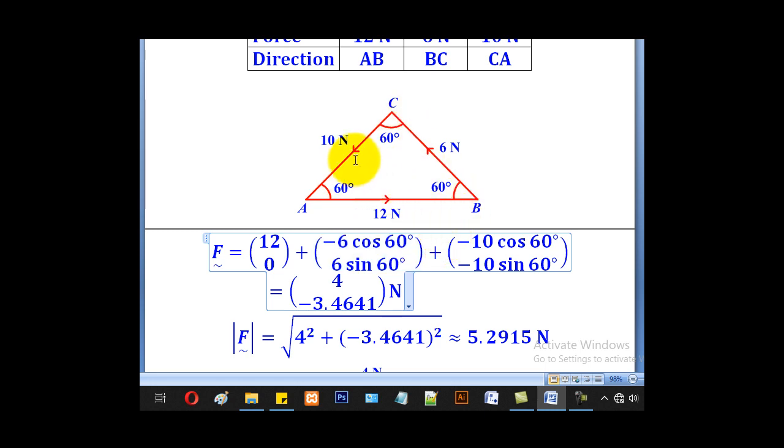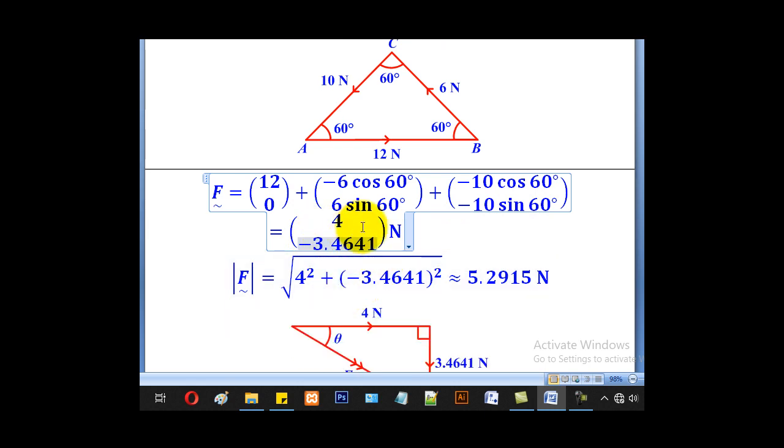For 10, horizontal it will be negative 10 cos 60, and vertically it will be negative 10 sin 60. Negative because it's going to the left, and also negative vertical because it's going downwards. So when you add everything up here for the horizontal component, we shall get 4, and when you add for the vertical component, we shall get negative 3.4641. So that will be our vector form for the resultant force.